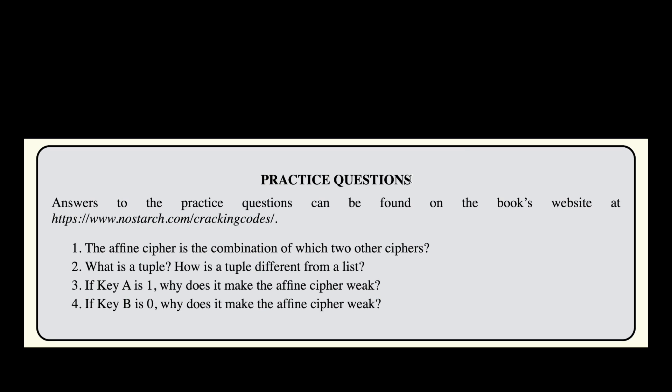Let's look at the practice questions. The first question is: the Affine Cipher is the combination of which two other ciphers? We know that we first multiply the index by key A, then shift the result by a certain number of positions using key B. That's a combination of the multiplicative cipher and the Caesar Cipher, which is also called the shift cipher.